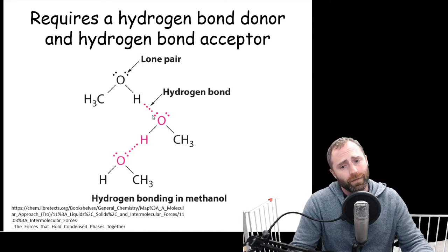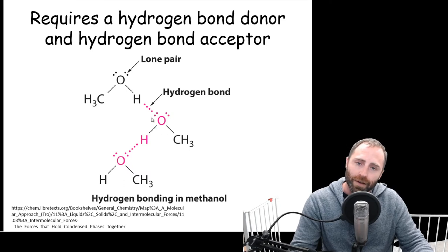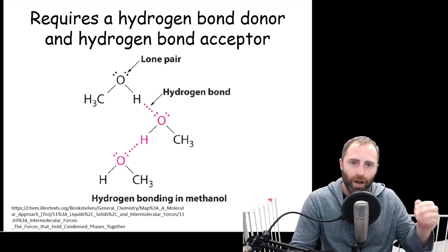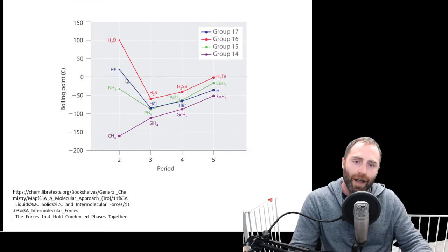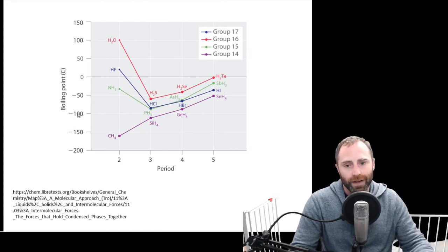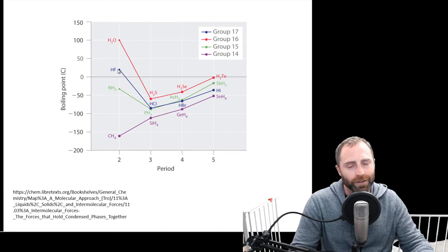The oxygen on the second methanol also has a hydrogen coming off it via a covalent bond. There's nothing stopping that hydrogen from hydrogen bonding to a third methanol — and this chaining can continue on and on. That's what allows substances capable of hydrogen bonding to have such high boiling points relative to what we'd normally predict. Water can form four different hydrogen bonds; hydrogen fluoride forms fewer but is a very polar molecule, so its interactions are incredibly strong.